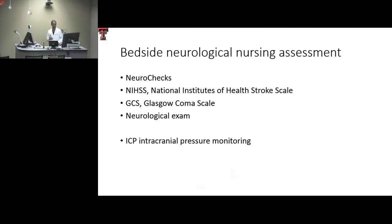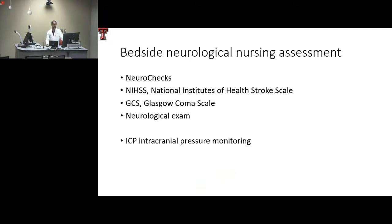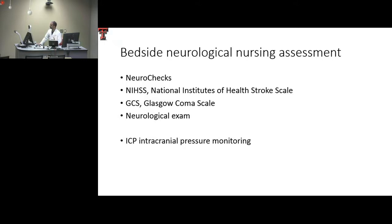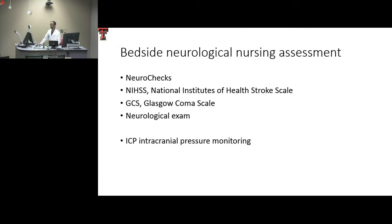Moving on to assessment: the bedside nursing assessment starts with neurochecks — that's the cornerstone, seen in every order for every neuroICU patient. More specific skills include the NIH stroke scale and the Glasgow Coma Scale. All of these are modifications of the neurological examination. Having a working knowledge of the neurological exam can help you make extra assessments in certain situations and pick up things not captured by these standardized tools.